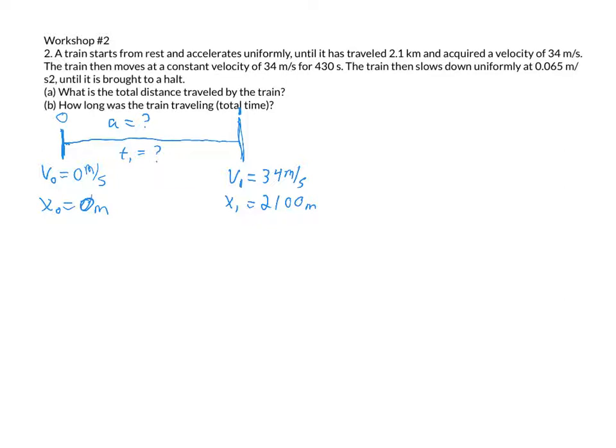Now it continues moving. So we have a new segment here. I'll draw another segment. Let's call this point two. The train moves at a constant velocity of 34 meters per second for 340 seconds. So constant velocity means we have an acceleration equal to zero meters per second squared during this time. That time is given to us, so we'll call this section's time t2 is 430 seconds.